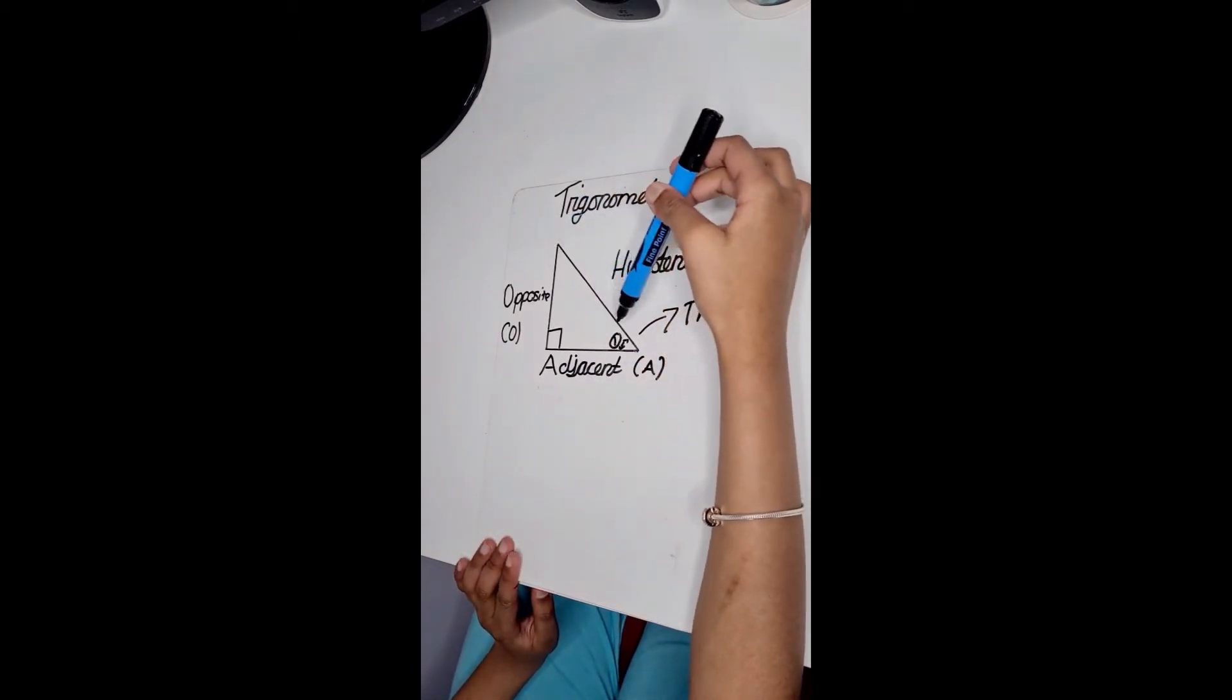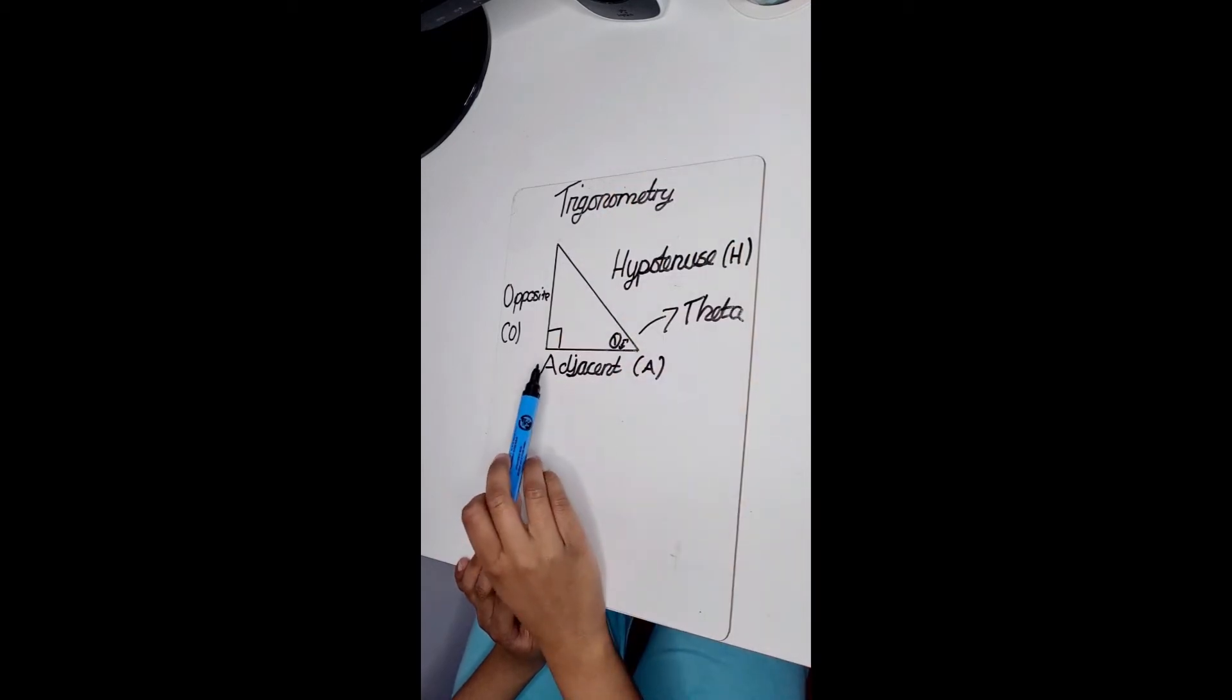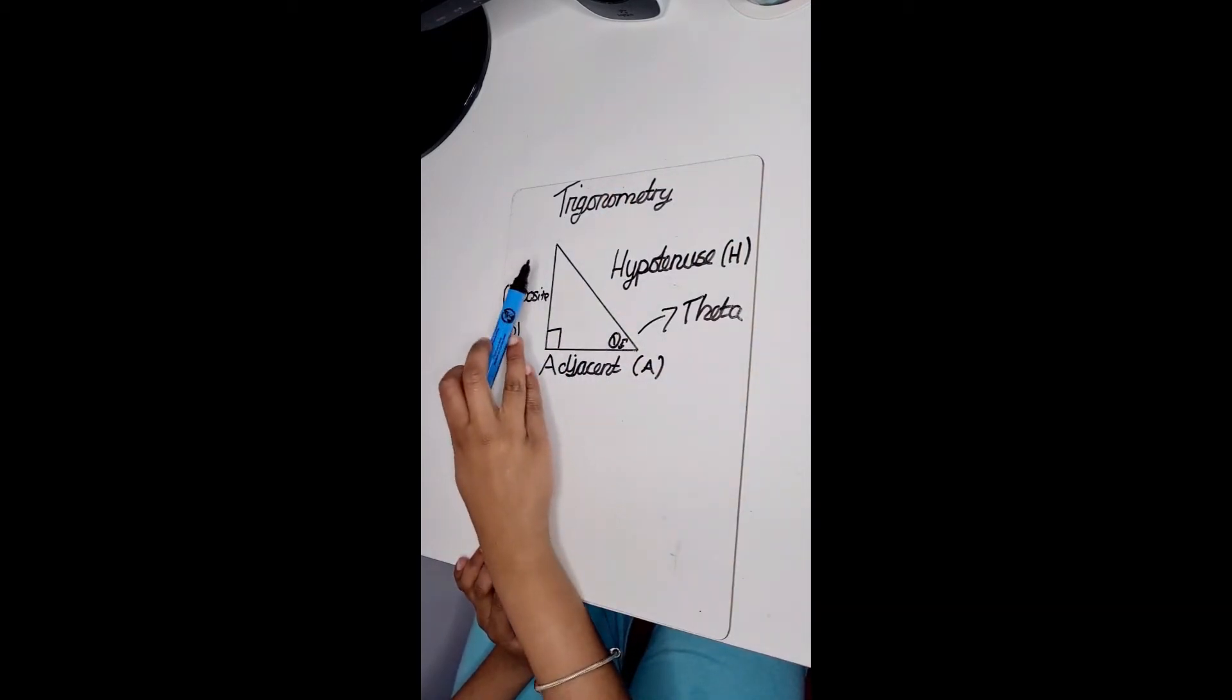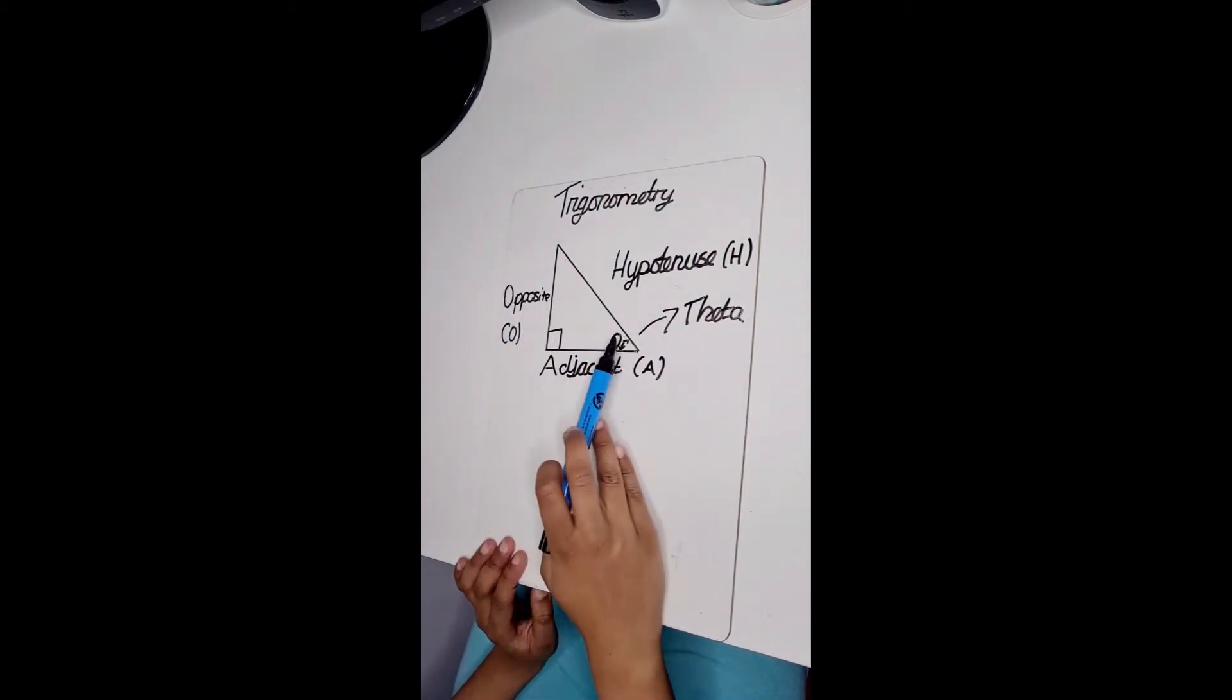This length here is the hypotenuse. Here is the adjacent and here is the opposite. And this little angle is called theta.